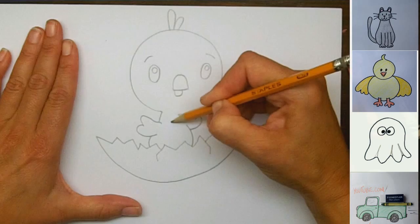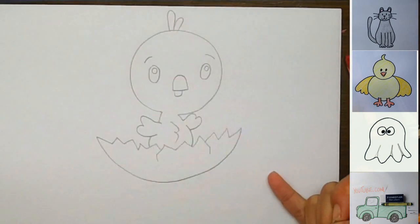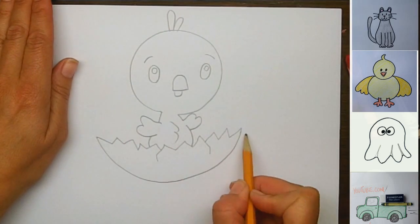And then if you want, you can put some feathers on here, too, to show his belly feathers. Okay, well, that's it. All we have to do now is draw some shell in the background, because the shell is broken in behind him, too.